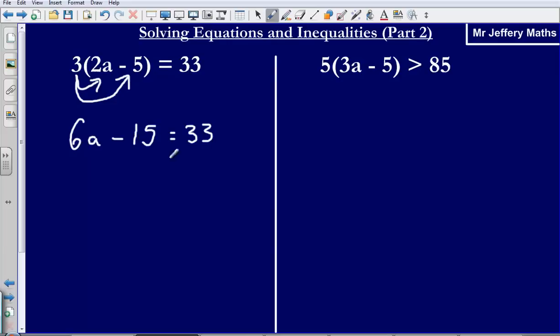So I've got 6a minus 15 equals 33. Now what I'm going to do here is I need to get rid of this negative 15. So the way in which I'm going to do that I'm going to add 15. By adding 15 to both sides of my equation it gets rid of the negative 15. And so what I'm left with is just 6a on this side of the equal sign.